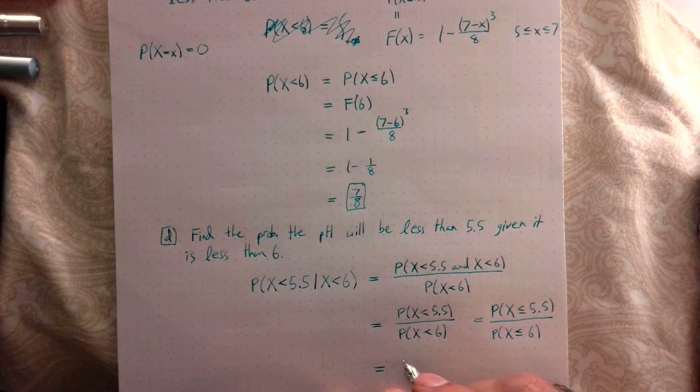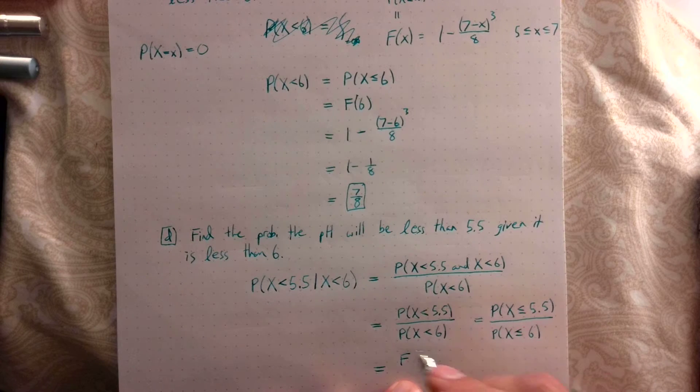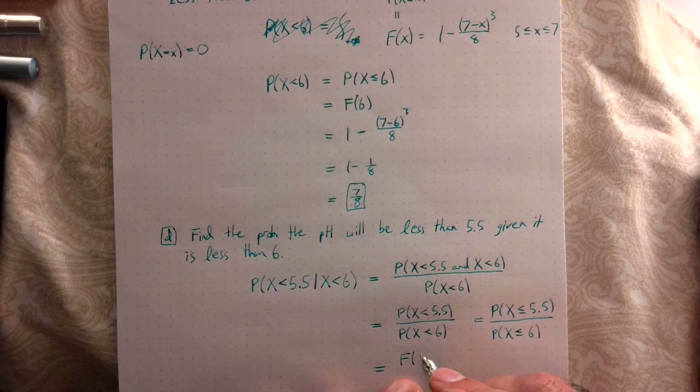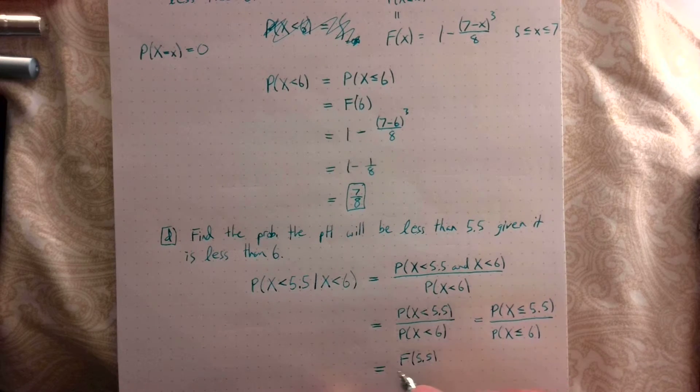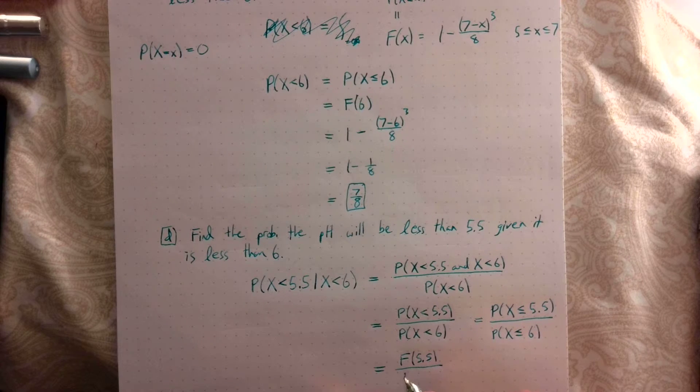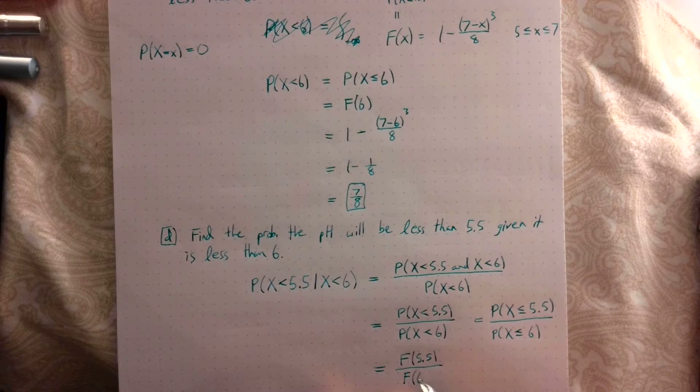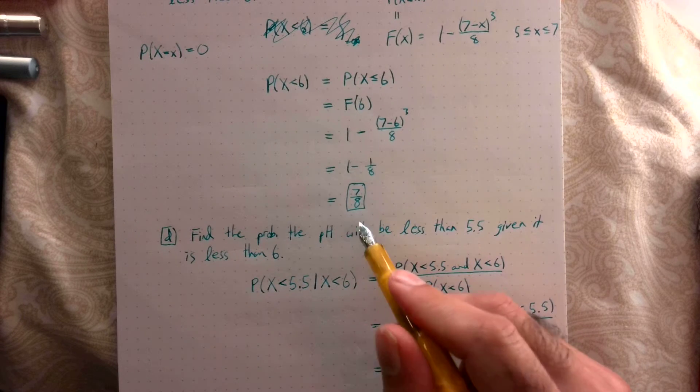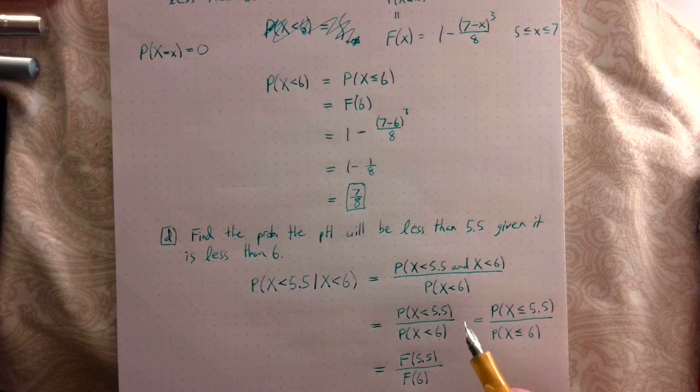And now this is going to be our cumulative distribution function, which we already found, evaluated at 5.5, divided by our cumulative distribution evaluated at 6. We already calculated that from part C.